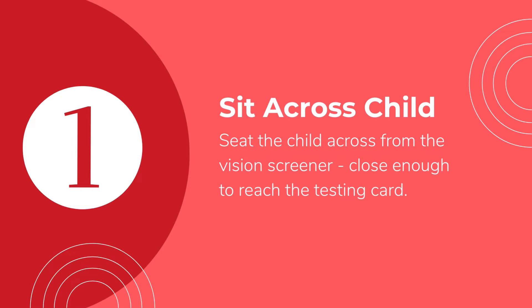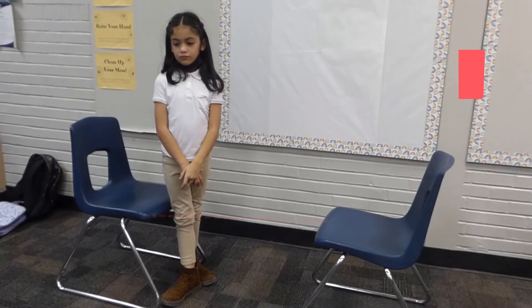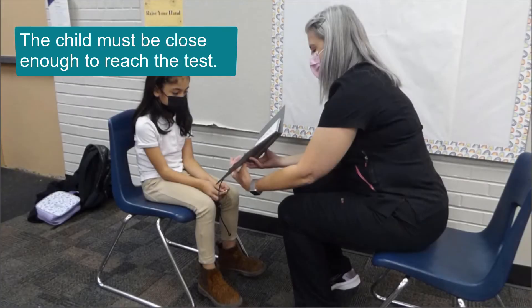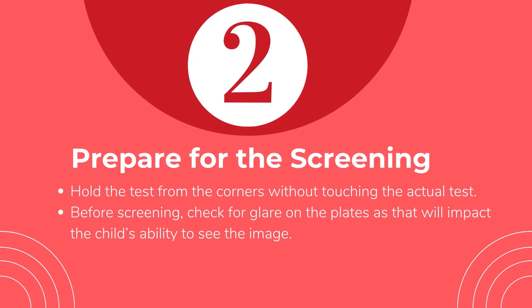Set two chairs across from each other. This can be done with or without a table. The child must be close enough to reach the test with their hand. Hold the test from the corners of the plate or from the book without touching the actual test. Before screening, check for glare on the plates, as that will impact the child's ability to see the image.